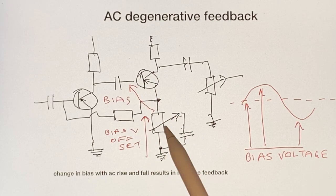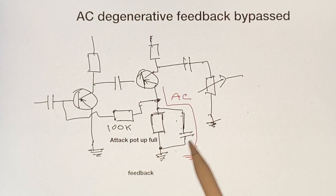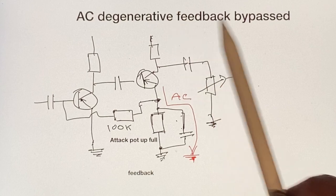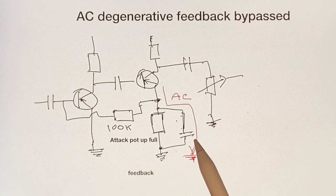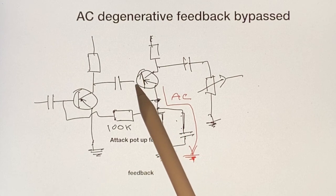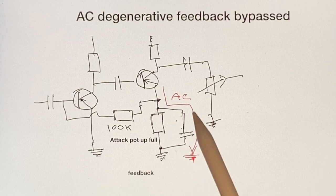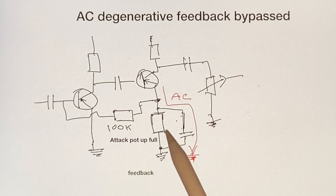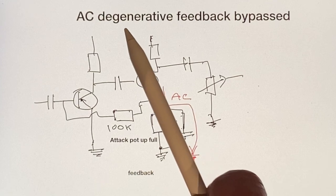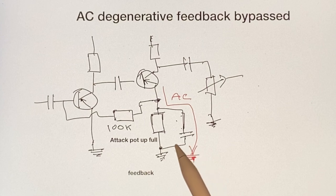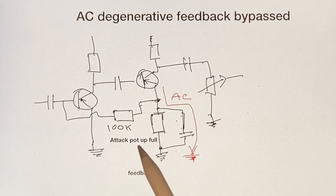So what can we do about that? We're reducing gain here. Well, what we do to reduce AC degenerative feedback is we can bypass. AC signals, we know, go through capacitors; the DC stays the same. So the bias is stabilized at the input, but the AC goes straight through the capacitor to ground over the RC frequency cutoff point. So we are getting rid of degenerative feedback by this bypass capacitor.